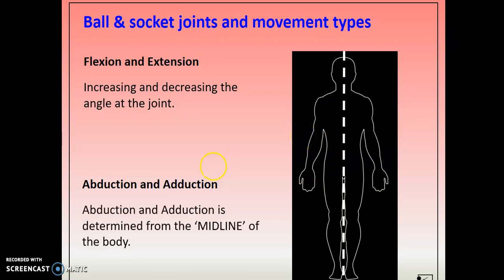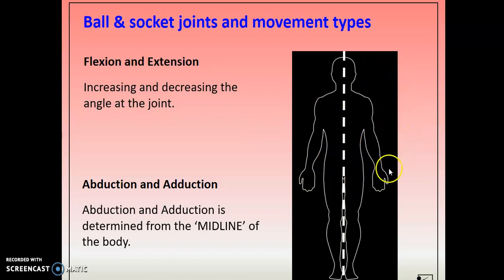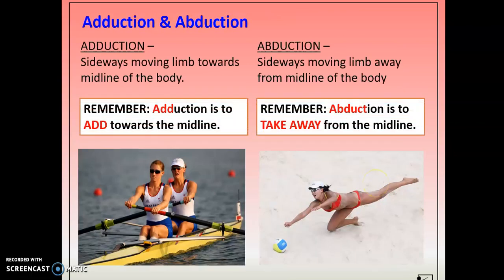Ball and socket joints also allow abduction and adduction. Abduction is moving away from the midline of the body — for example, raising your arms out to the side. Adduction is moving back towards the midline — bringing your arms back down to your side. The same applies at the hip joint: taking the legs out is abduction, bringing them back in is adduction.